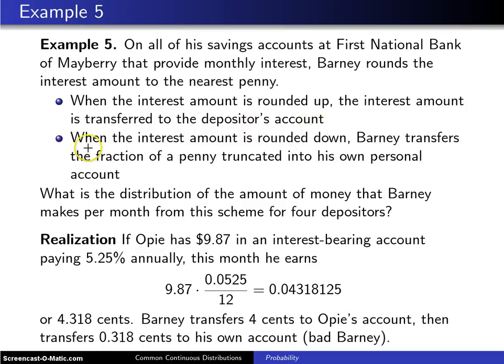But here is the part where Barney gets into trouble. When the interest amount is rounded down to the nearest penny, Barney then transfers that fraction of a penny that is truncated to his own personal account. Okay, so this is something he shouldn't be doing.